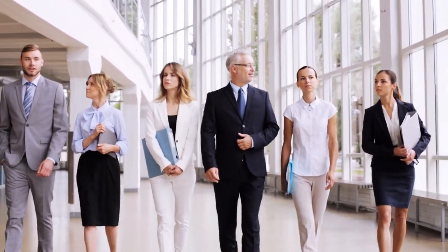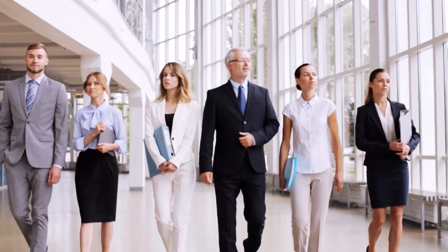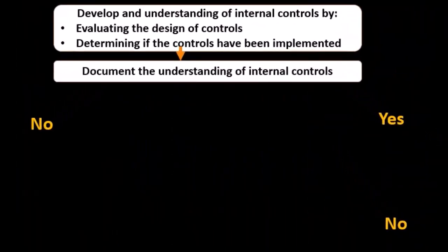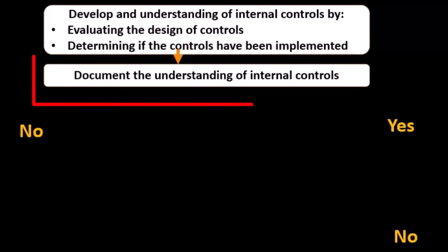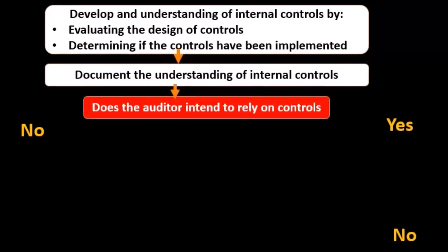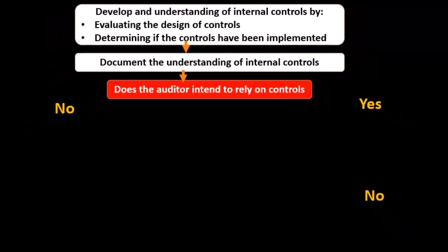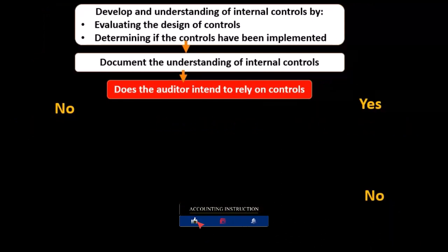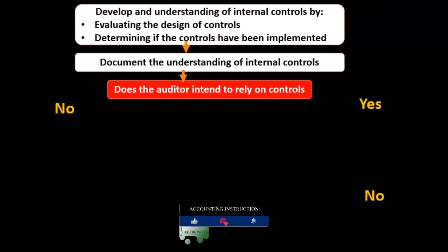Next we're going to document the understanding of the internal control. Once we have that understanding, as auditors gathering evidence, we will document that understanding. Then we come to a question point — the red box represents a yes or no type of question.